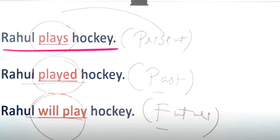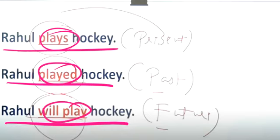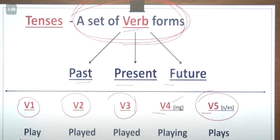In this sentence, present and past tense: Rahul plays hockey, Rahul played hockey, and will play hockey. V1...